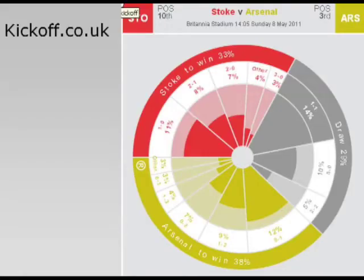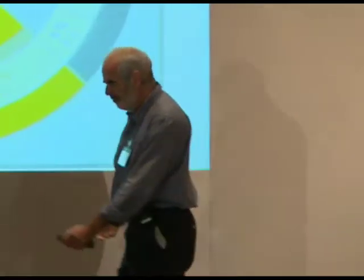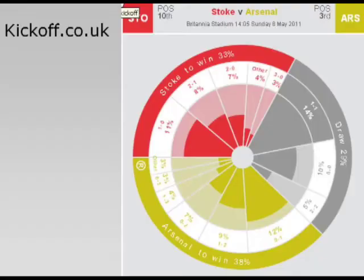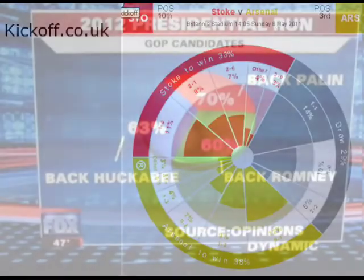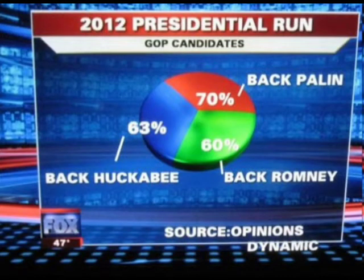There are all sorts of graphics for showing probabilities. Here's a pie chart — a standard pie chart — showing probabilities for a football match: Stoke versus Arsenal last May. Stoke won, which was very surprising. This shows the segment broken up into probabilities. But this is not a good pie chart. Here's one from Fox News showing presidential preferences — values in a pie chart should add up to 100%. Not all pie charts are great.